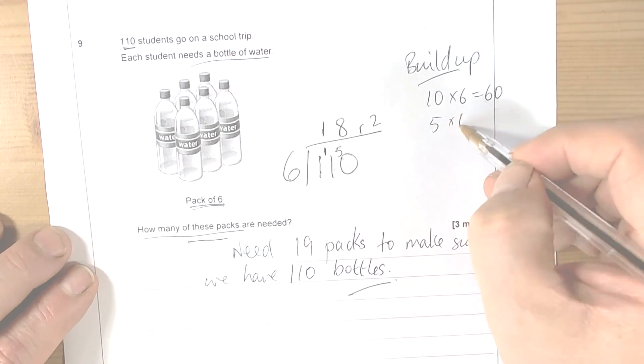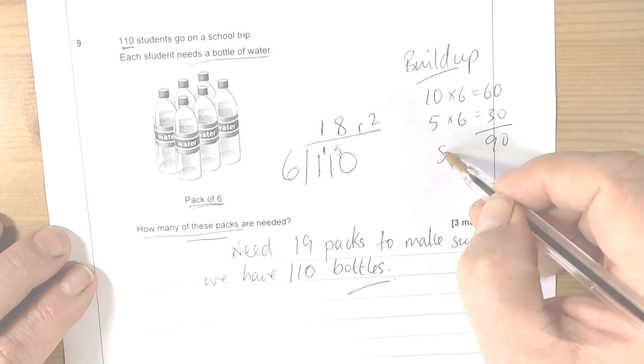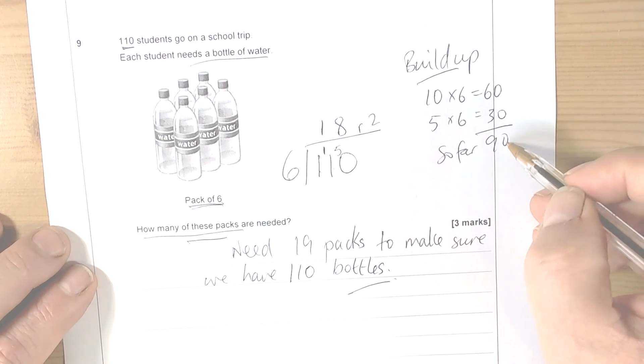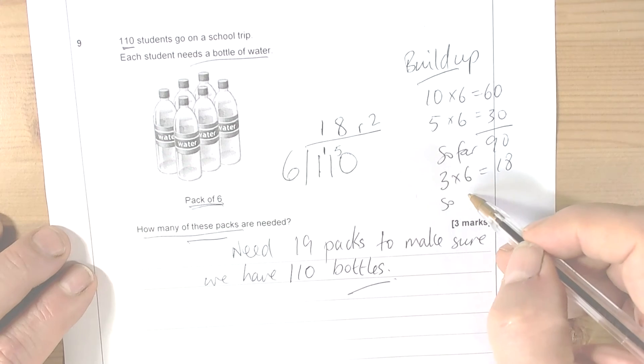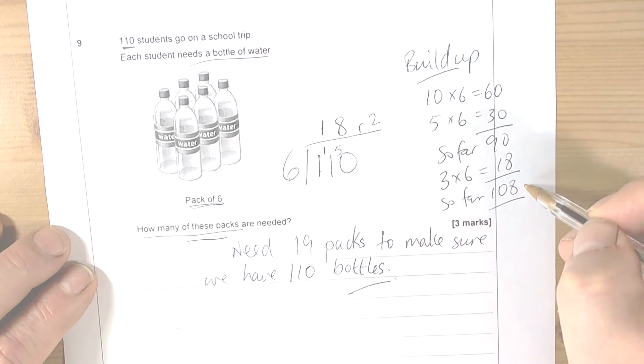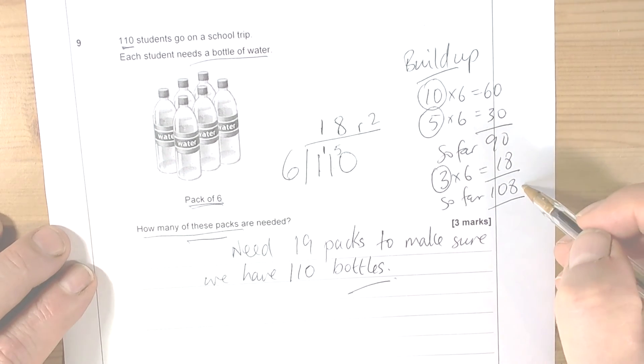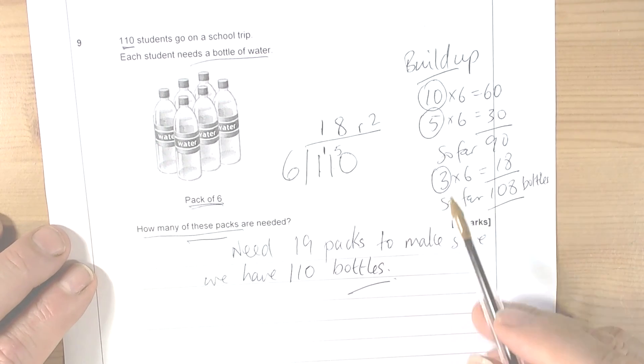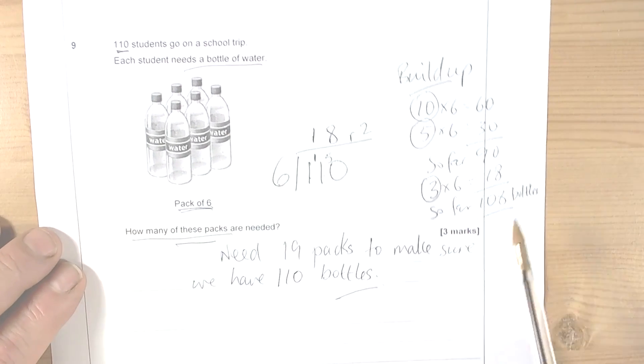Five packs would be 30, so so far 90. Three packs would be 18, so so far we'd have 108. So now we have 10 packs, 5 packs, and 3 packs. Again, that would then show us that we need another pack because we haven't quite got enough. So there are lots of ways to try to do this kind of question.